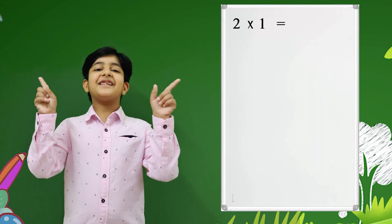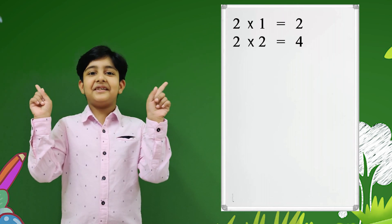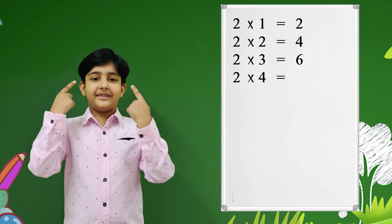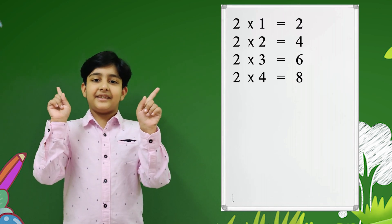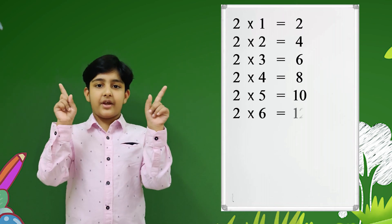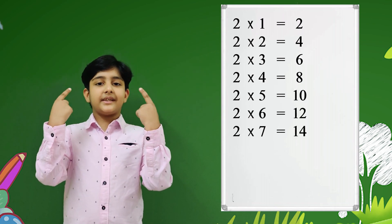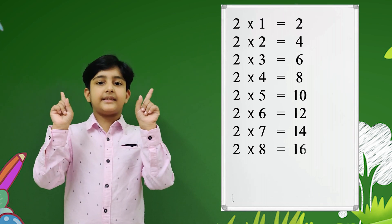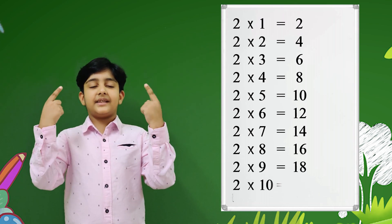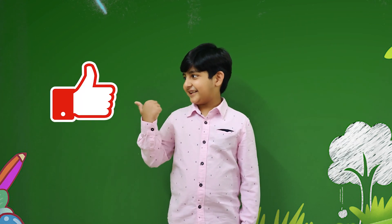Two ones are 2, two twos are 4, two threes are 6, two fours are 8, two fives are 10, two sixes are 12, two sevens are 14, two eights are 16, two nines are 18, two tens are 20.